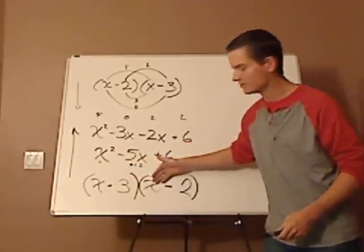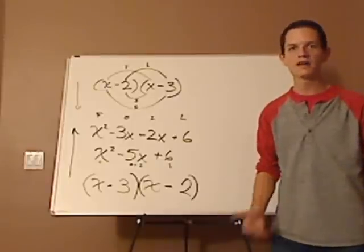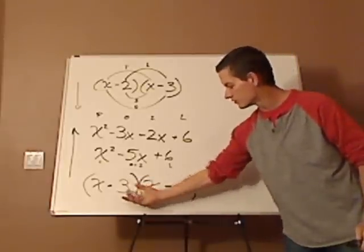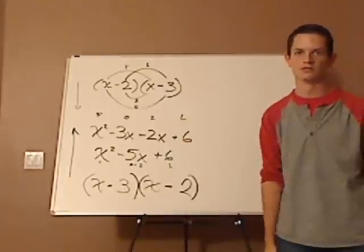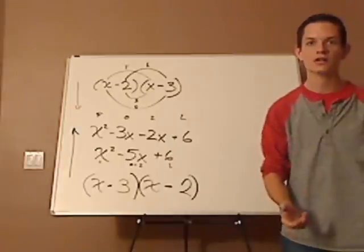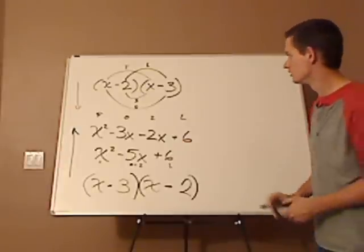Well, you already did x times x. So you don't have to check that. You already did that. You have the negative 3 times the negative 2. You set it up for that. Now, what you want to do is check the middle term.